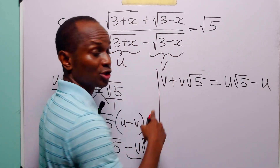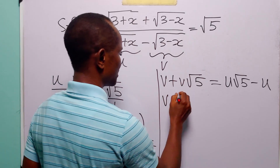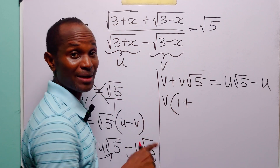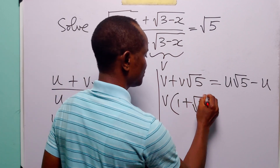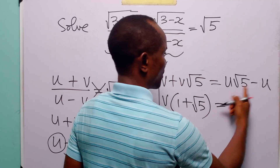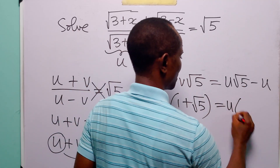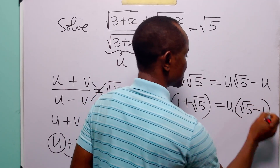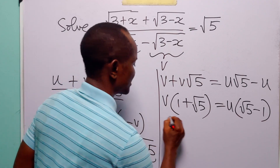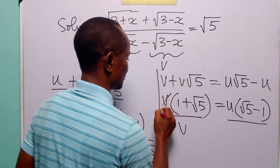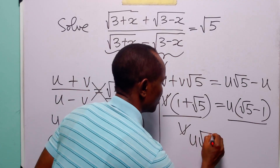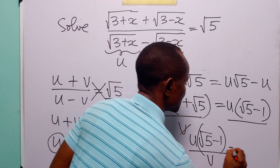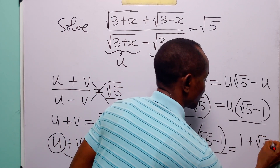Looking at the left side, we see a common factor of v, so we factor out v to get v times (1 plus root 5). On the right side, the common factor is u, giving u times (root 5 minus 1). Now let us divide both sides of this equation by v, so we have u times (root 5 minus 1) over v is equal to 1 plus root 5.